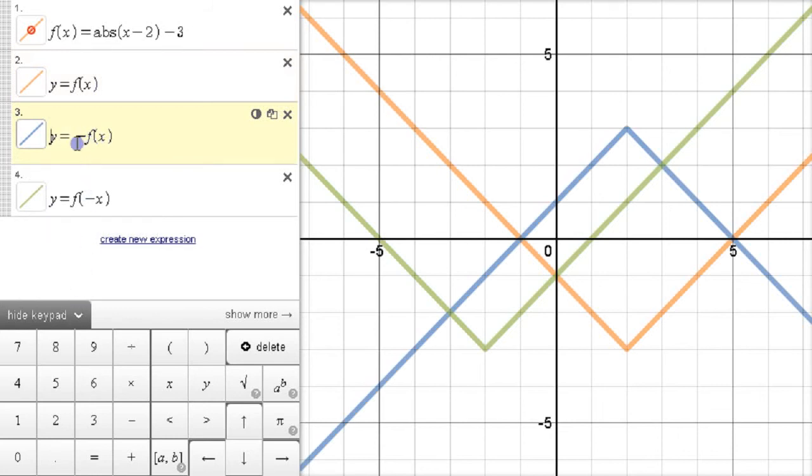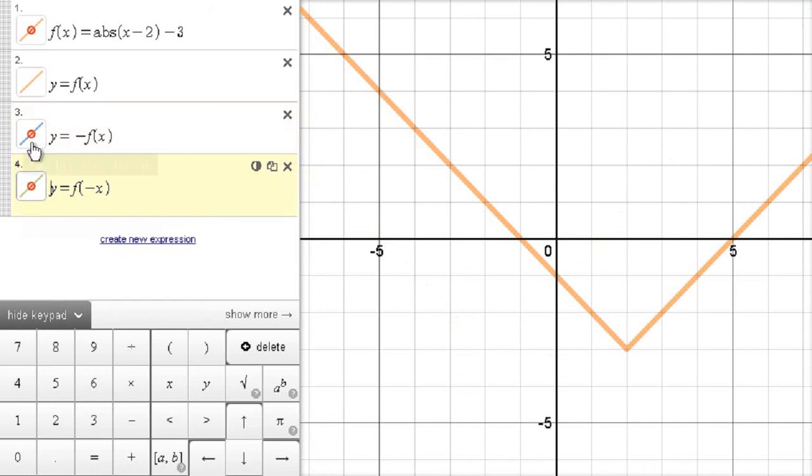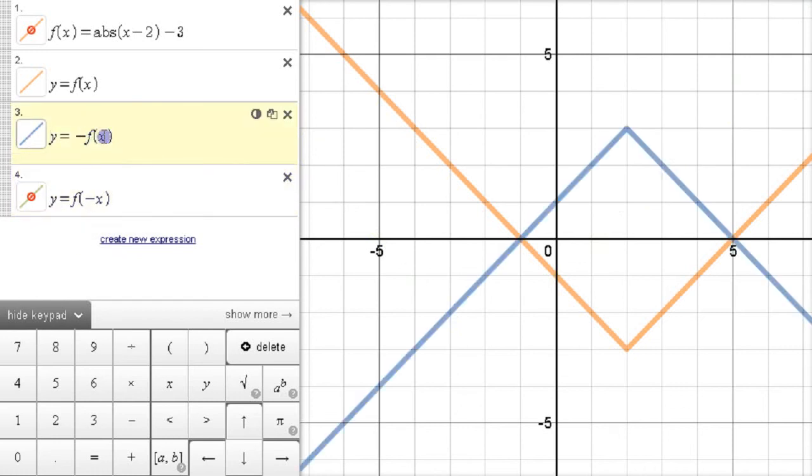Relate it in your mind to where the negative sign is. If it's applied before you apply the function, if you have the negative sign before you apply the function, it's a change in x. It's horizontal. If you apply the negative after you apply the function, it's vertical. Changes the y values.